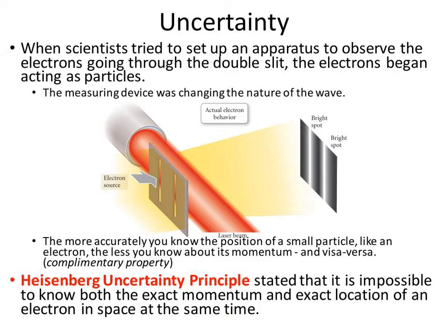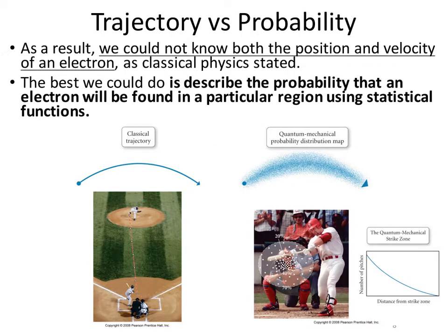You can't know both, and this is the basis of Heisenberg's uncertainty principle. He said that it's impossible to know both the exact momentum and the exact location of an electron in space at the same time. So if it's not possible to know both, we can basically show a probability. We wouldn't be able to know the momentum and the position at any time, but if we know the momentum, we could guess the position, or if we knew the position, we could statistically guess the momentum. The best thing we can do is describe the probability that an electron will be found around the nucleus in an atom.